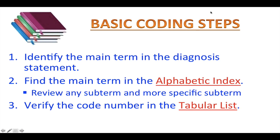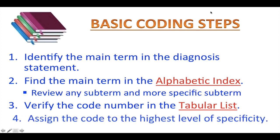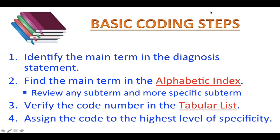In this step, you also need to make sure your code is complete — whether it is a 3, 4, 5, 6, or 7 character code. For example, if the code indicates that a 7th character is required, then it must be included. In addition, you need to read all information given in order to obtain the best code that describes the patient's specific disease or condition. After that, the last step is to enter the code into the medical record and you're done.